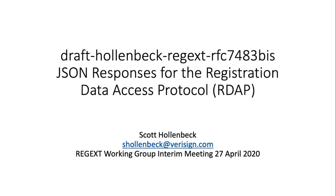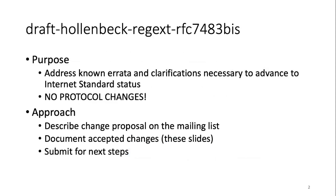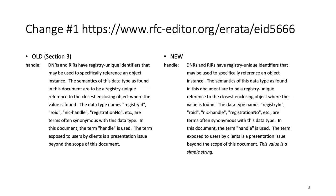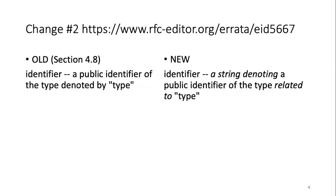Most of what we saw in 7482 were either errata or items that came up on lists. RFC 7483 has been one of the places where we've had a little more discussion around what actually goes into a JSON response. The purpose and approach are exactly the same. Change number one is the description of a handle — the suggestion is to simply note that a handle value is a simple string. Change number two, slide four: the definition of an identifier, again noting that it is a string.